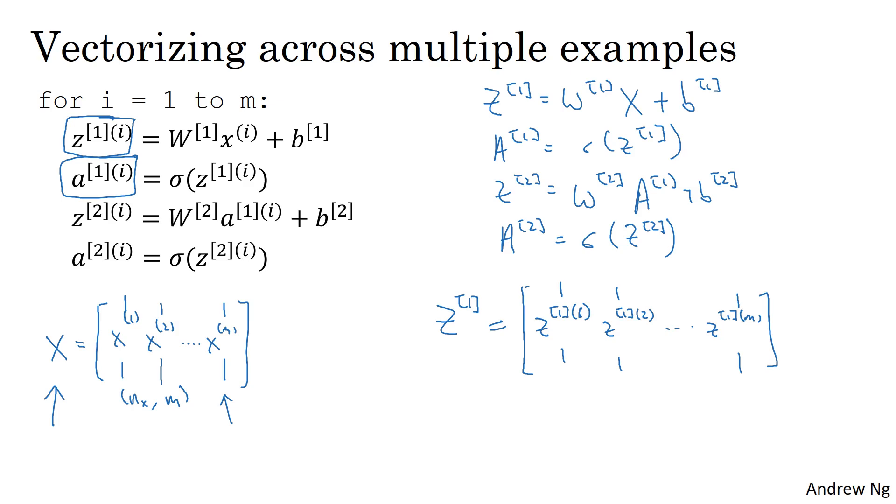And similarly, if you look at this quantity, you can take A1, 1, A1, 2, and so on, and A1m, and stack them up in columns. Then this, just as we went from lowercase x to capital case x, and lowercase z to capital case z, this goes from the lowercase a, which are vectors, to this capital A1. And similarly for Z2 and A2, right? They're also obtained by taking these vectors and stacking them horizontally, and taking these vectors and stacking them horizontally in order to get capital Z2, and capital A2.